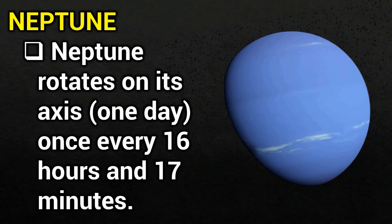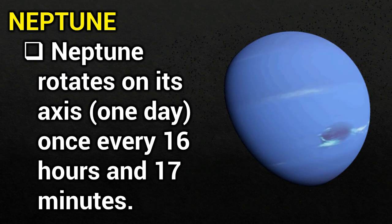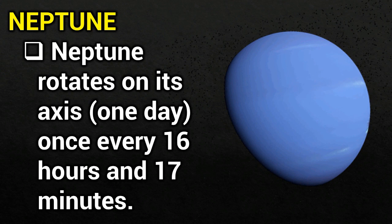Neptune. Neptune rotates on its axis once every 16 hours and 17 minutes.